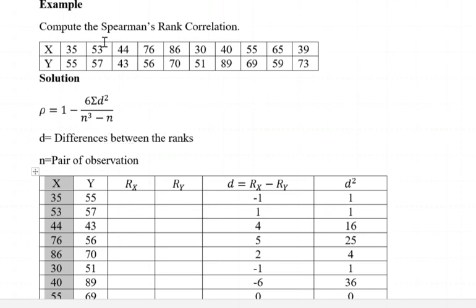So in this case, the pairs of observations we have are 1, 2, 3, 4, 5, 6, 7, 8, 9, and 10.